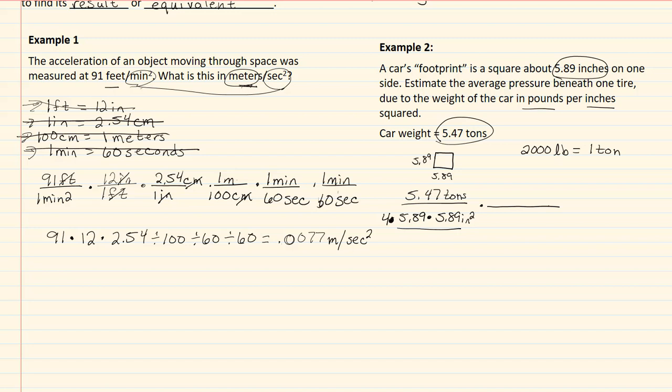Now I'm going to convert my tons. My tons is on top, so I'm going to put ton on the bottom. We're going to put 2,000 pounds on top. So tons is gone. That leaves me with pounds per inches squared.